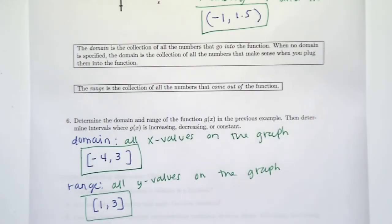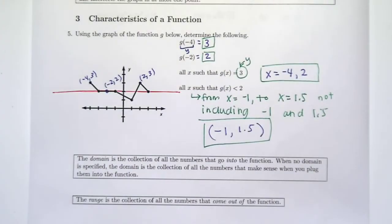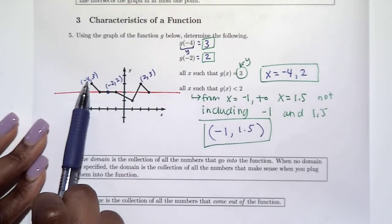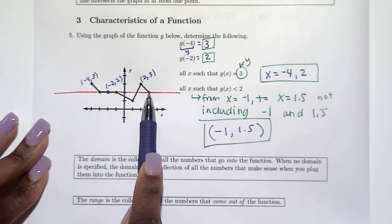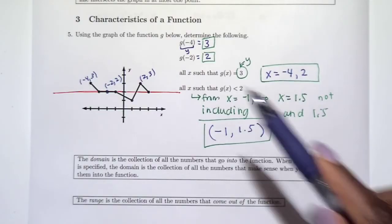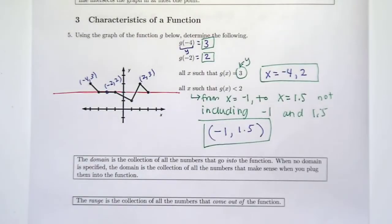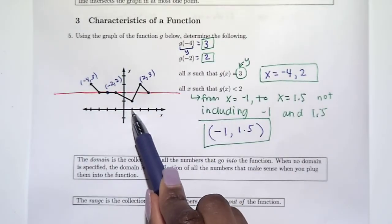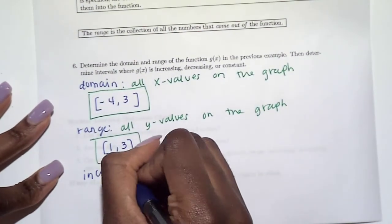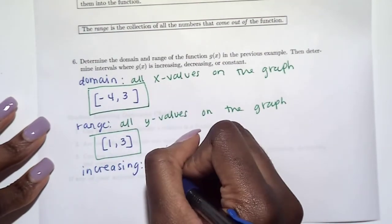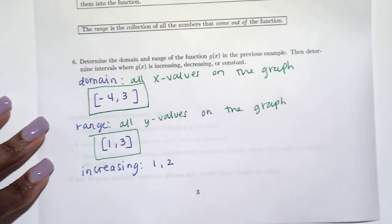The next part says to determine intervals where the graph is increasing, decreasing, or constant. We read graphs left to right, just like words. Reading left to right, the graph goes down, then constant, then down, then up, then down. The function is increasing only where it goes up, and we talk about the x-values. It goes up between x equals one and x equals two, so the graph is increasing on the open interval from one to two. For increasing, decreasing, and constant we always use open intervals.